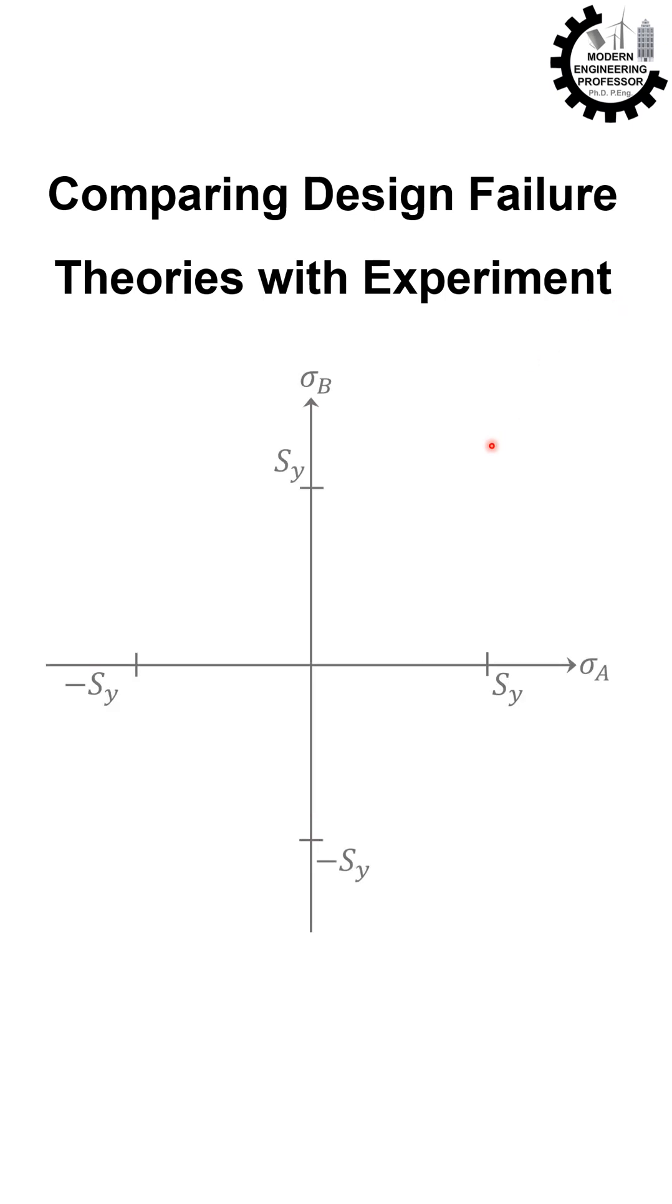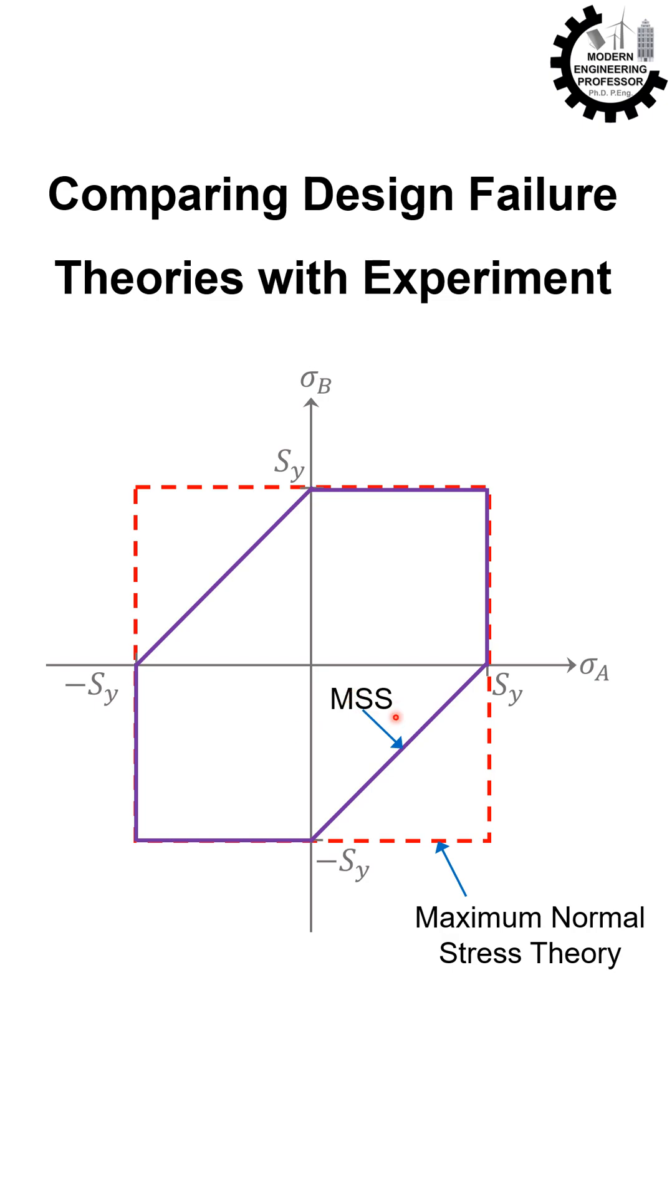If we draw the failure boundaries for various theories on the same set of axes, we get the following curves for maximum normal stress theory, maximum shear stress or Tresca theory, and distortion energy or von Mises theory.